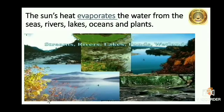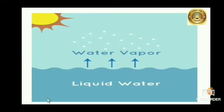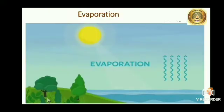The sun's heat evaporates the water from the seas, rivers, lakes, oceans and plants. Children, plants also lose water in the form of water vapor from their leaves into the air. When the sun shines and heats up, the sun warms the water, turning it into the invisible gas called water vapor. This process — the changing of water into a gas — is called evaporation. Because gas is lighter than liquid, water vapor rises up into the sky.